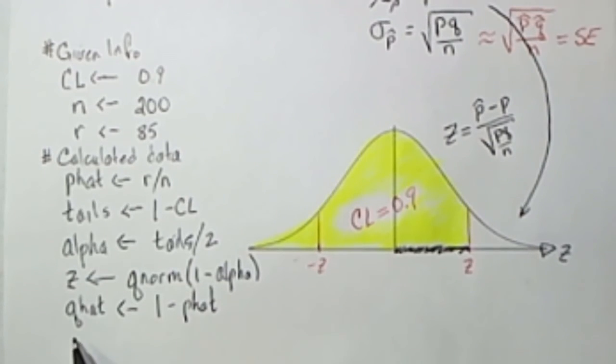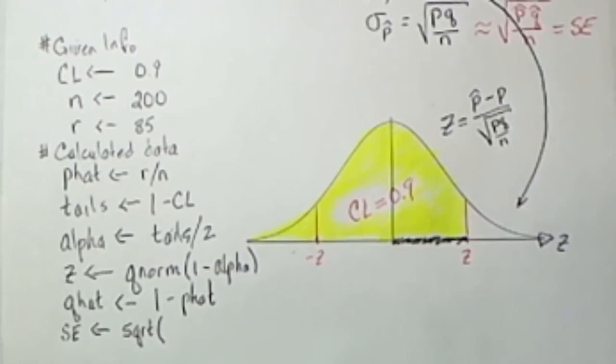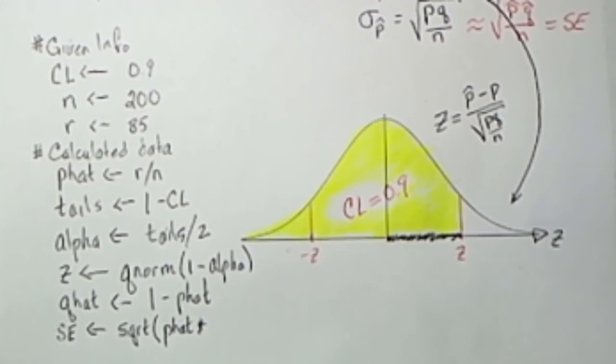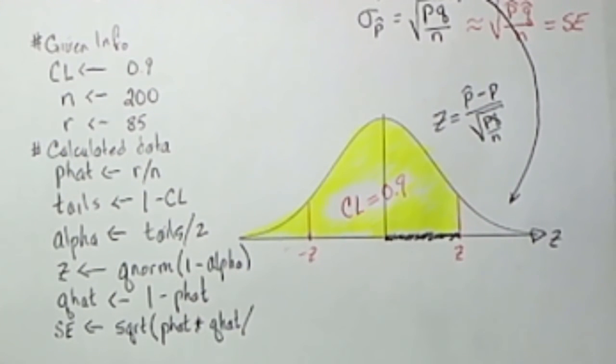So Q hat is just 1 minus P hat. And then our standard error is going to be the square root of P hat times Q hat divided by N.